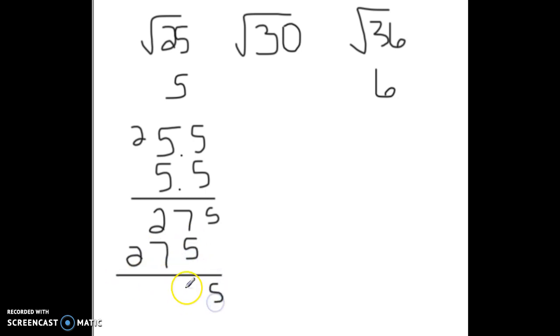And we get 5, 12 carry my 1, 10 carry my 1. Okay, so we have 30.25. That is super close.